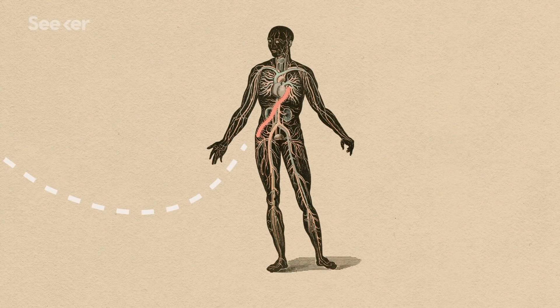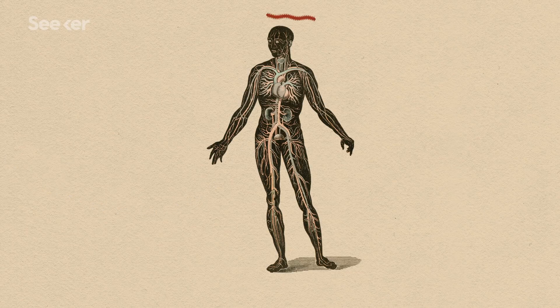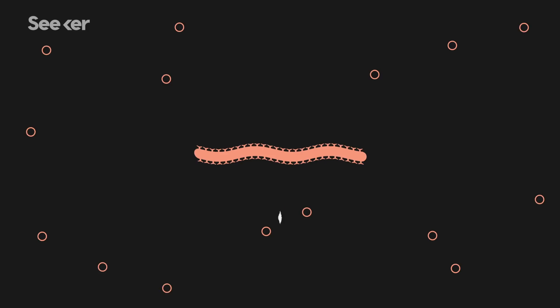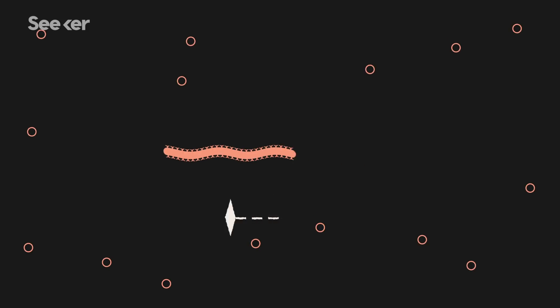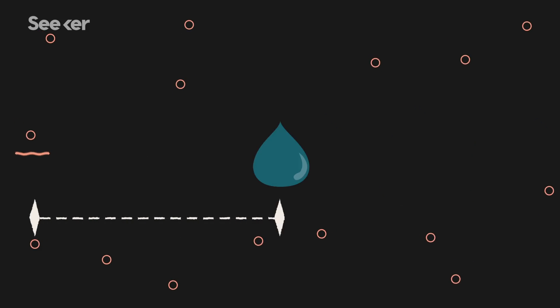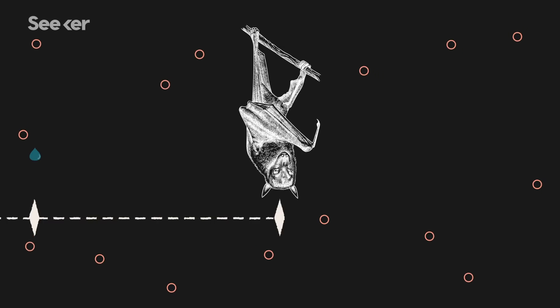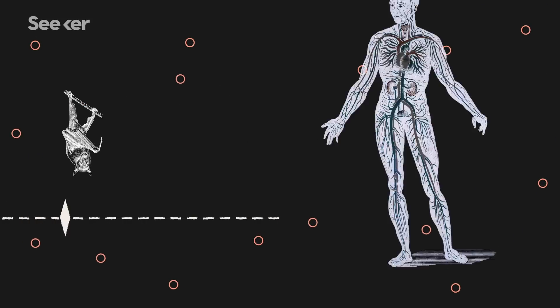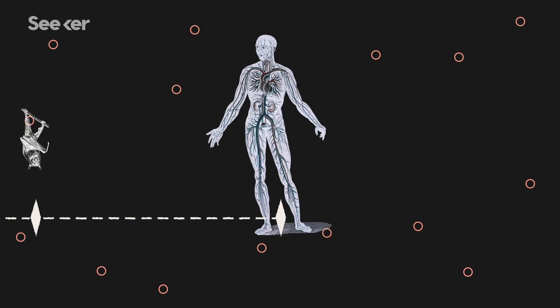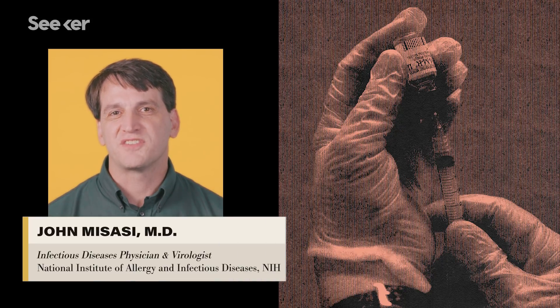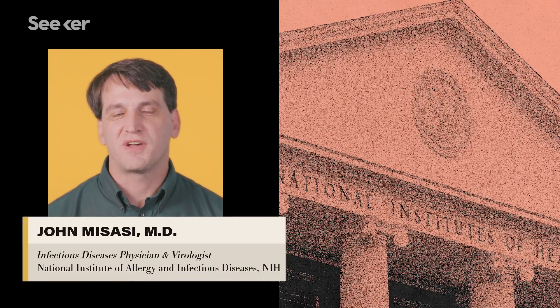There's a couple different patterns that occur. One is that someone hunts an animal that is infected with the virus, and they catch it because they're exposed to the blood or body fluids, or they're preparing the food that was caught. Hi, my name is John Massassi. I am a pediatric infectious disease specialist at the National Institute of Health Vaccine Research Center. I've been working on Ebola since 2005.